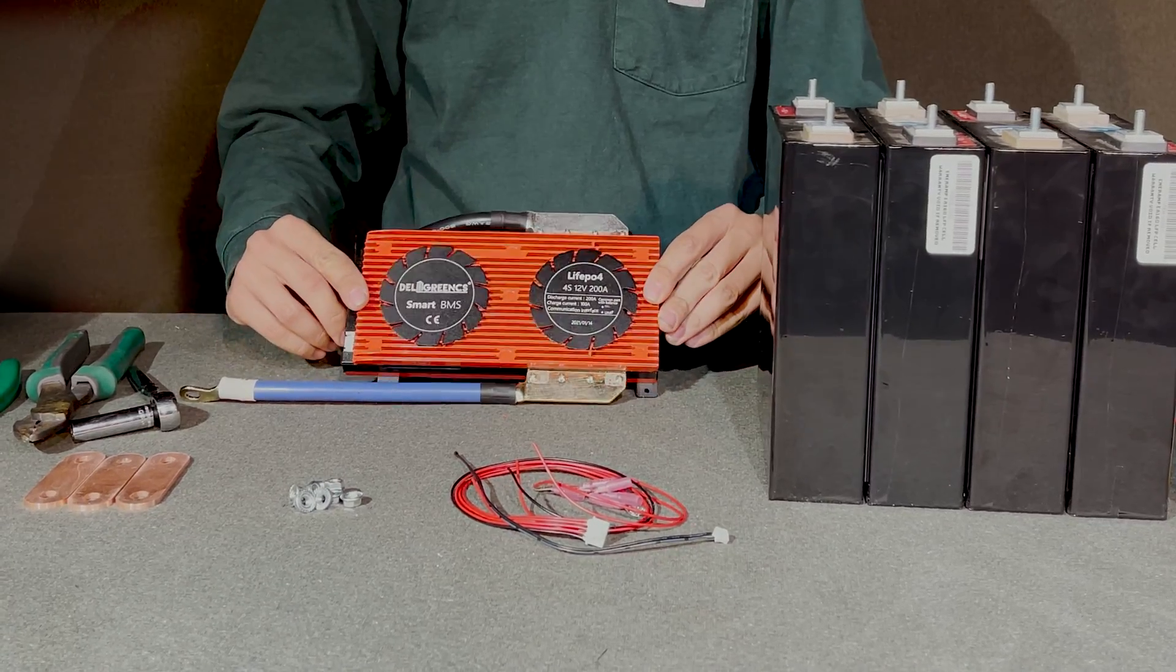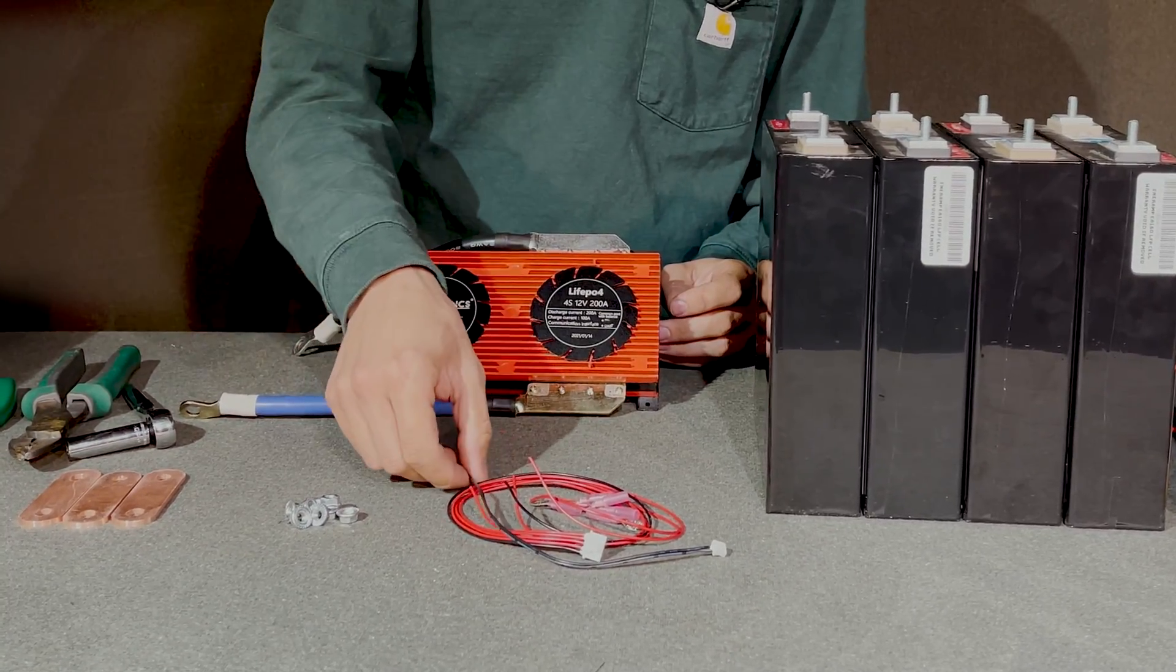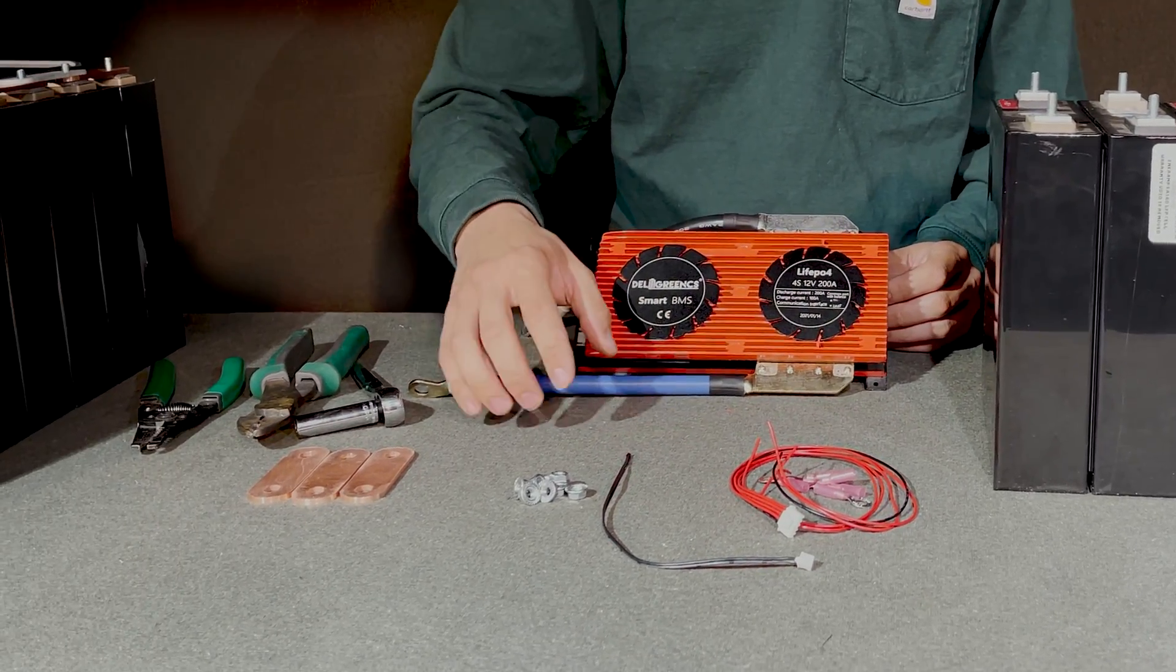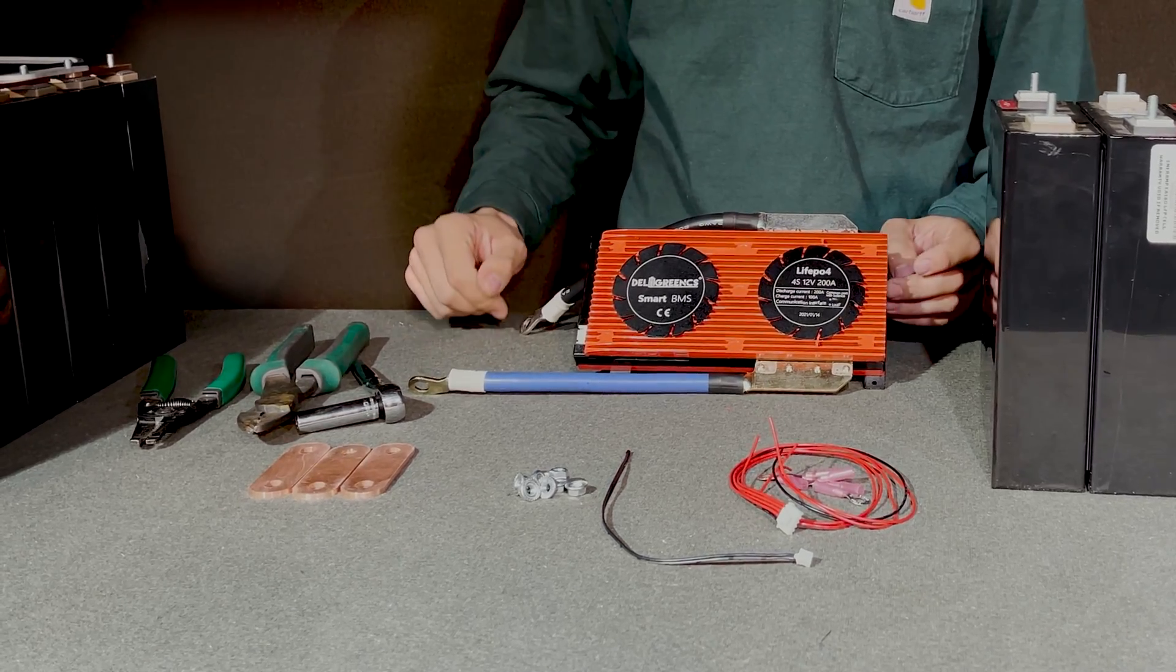So we're going to be using this Deligreen 4S 200 Amp BMS. We also have the temperature probe and the balance harness here as well as some ring terminals. We have the bus bars for our batteries, the nuts, and a few different tools.